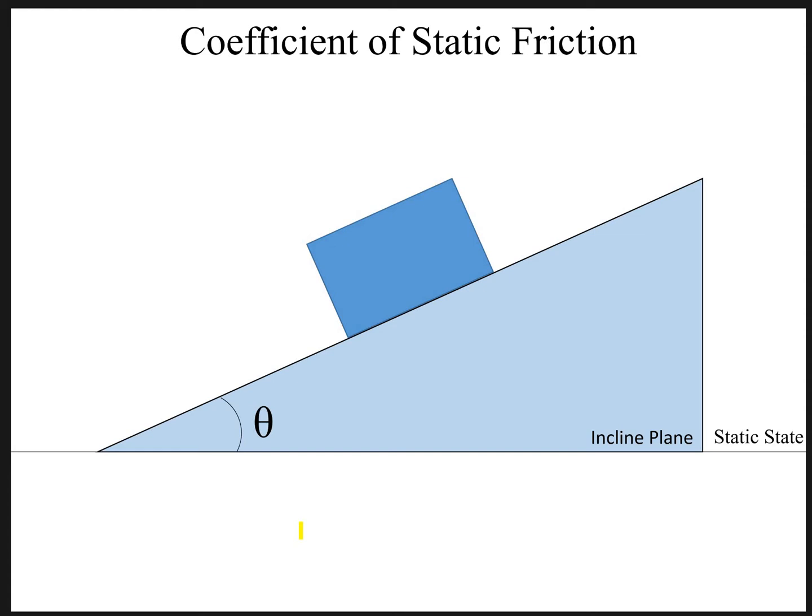Okay, in this case we consider the block is placed at rest on an inclined surface. In the previous one we considered a horizontal surface and in this case we are considering an inclined wedge. So the same forces will be acting on this block as they were acting in the previous case.